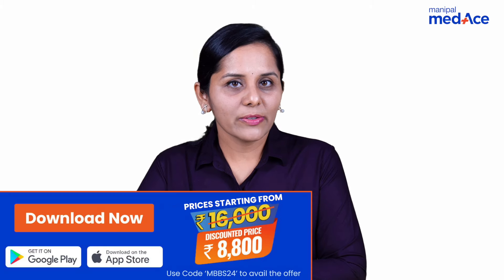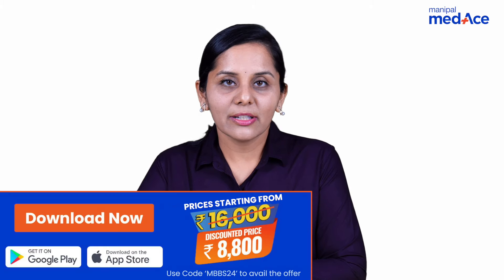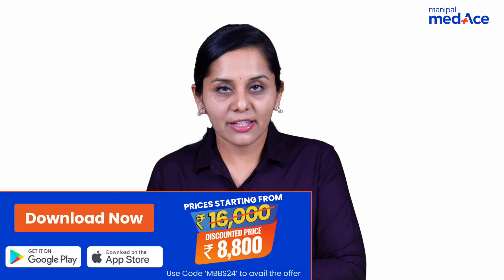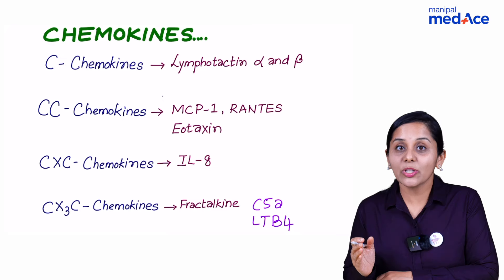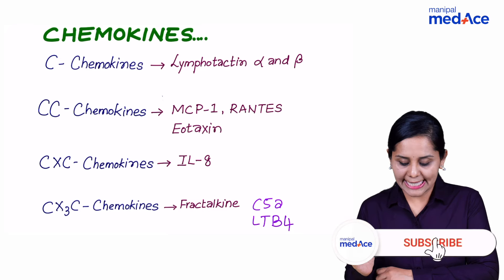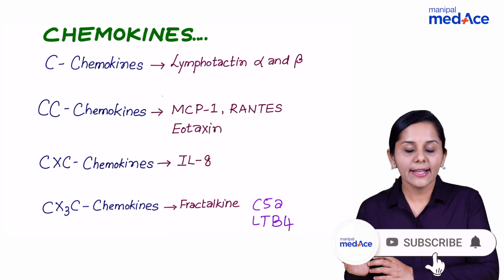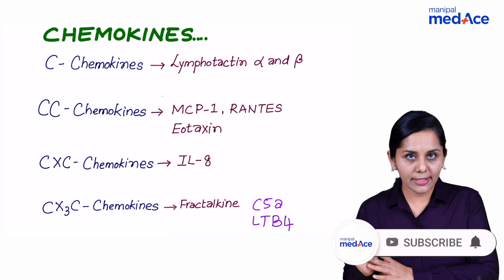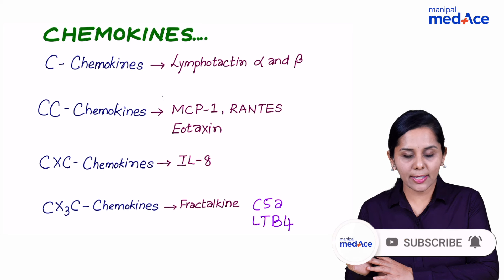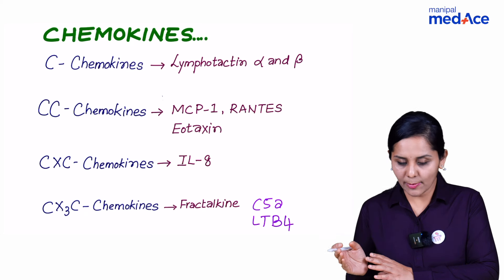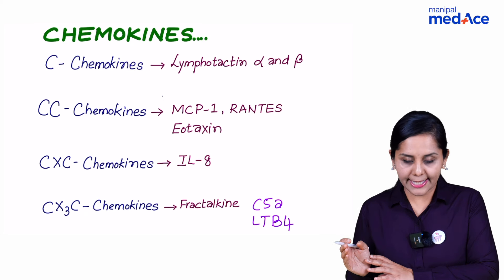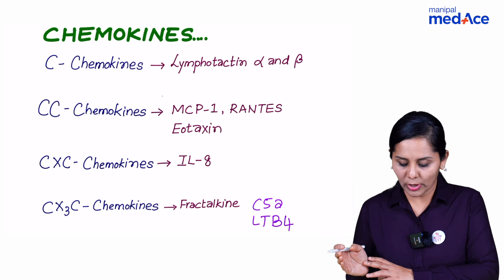The locomotion oriented along a chemical gradient is called chemotaxis, and what mediates it is chemokines. There are different kinds of chemokines starting from C chemokine, CC chemokine, CXC chemokine, and CX3C chemokine.